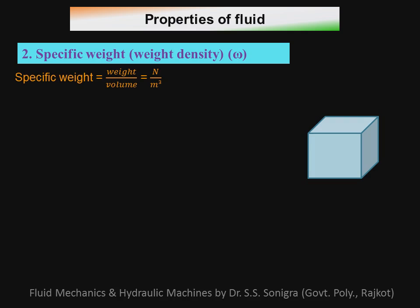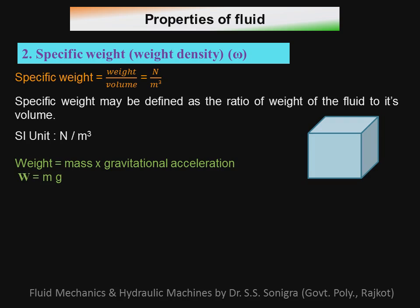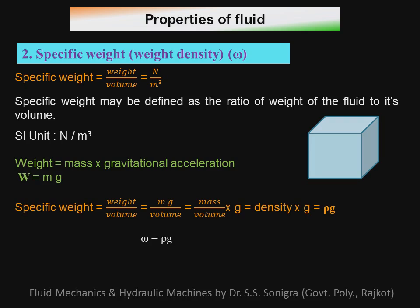The second property is specific weight, also called weight density. It is defined as the ratio of weight to volume, and the unit is Newton per meter cube. Since weight equals mass times gravitational acceleration (w = mg), specific weight equals weight upon volume, which gives rho times g. The specific weight of water is 1000 kg/m³ × 9.81 m/s² = 9810 Newton per meter cube.